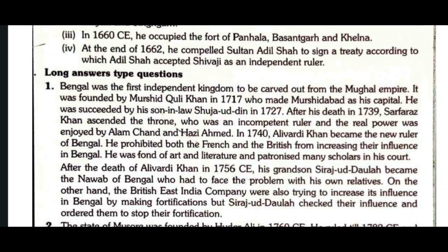After Shujauddin's death in 1739, Sarfaraz Khan ascended the throne, who was an incompetent ruler. The real power was enjoyed by Alam Chand and Haji Ahmed. In 1740, Alivardi Khan became the new ruler of Bengal.